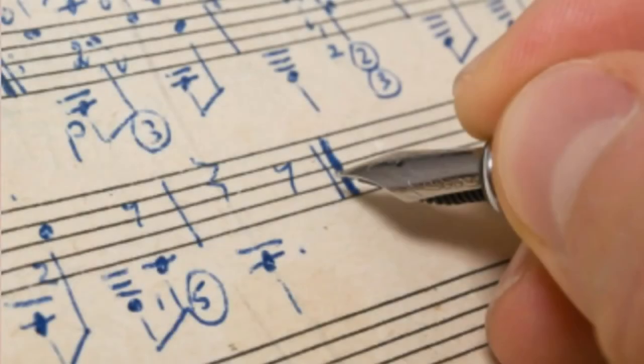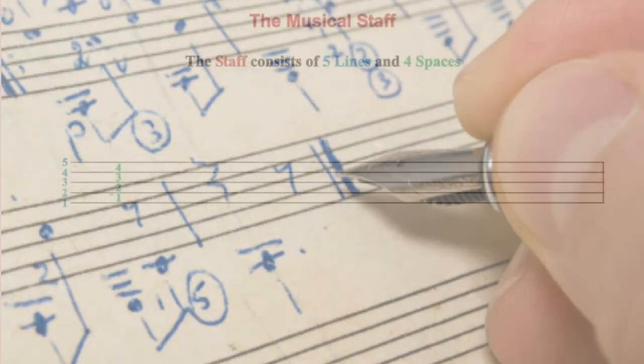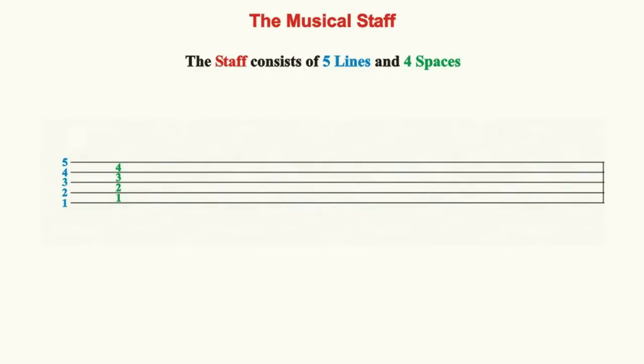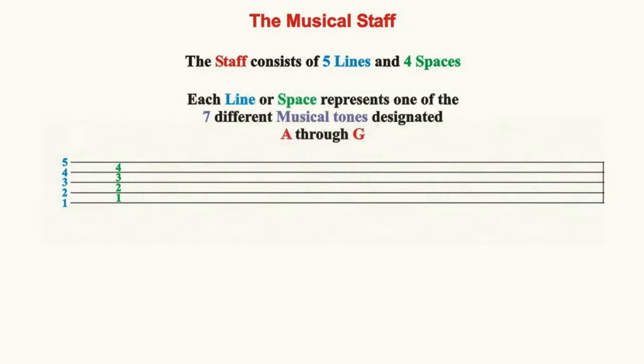We will need some kind of agreed-upon vocabulary or system of graphic symbols that will convey exactly which pitches will be performed. Our current graphic used to convey pitch information is called a staff. The staff is made up of five lines and four spaces between those lines. Each line or space is named for one of the seven different tones, either A, B, C, D, E, F, or G.